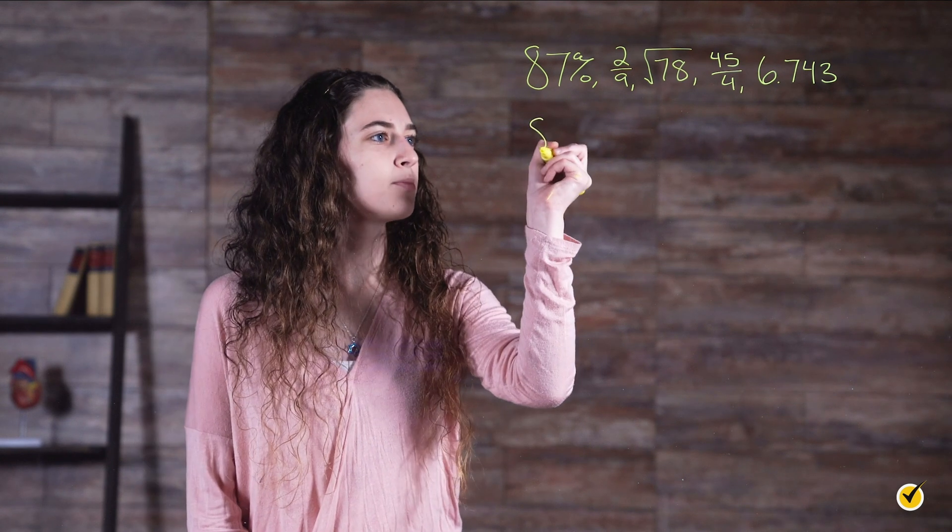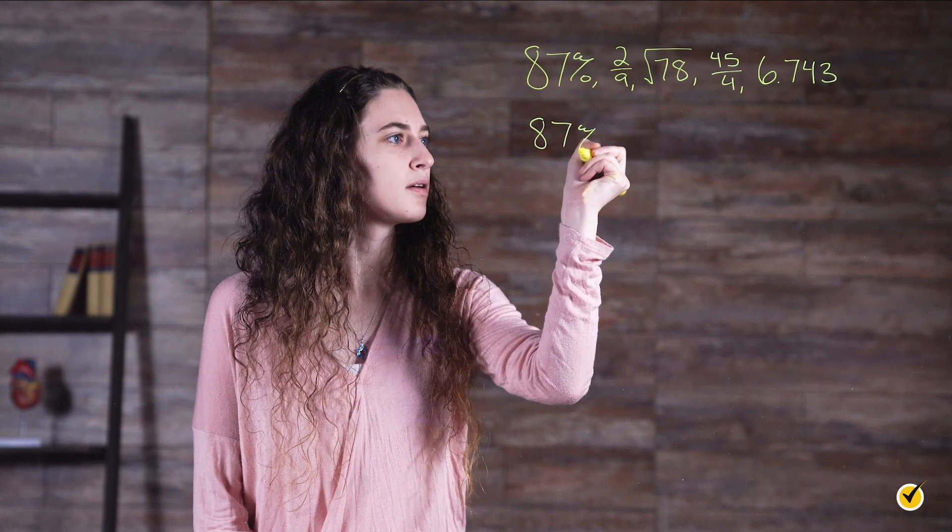We are going to start by turning each of these into a decimal. Remember, to turn a percent into a decimal, simply change the percent sign to a decimal point and move it two places to the left. So eighty-seven percent is equal to 0.87.